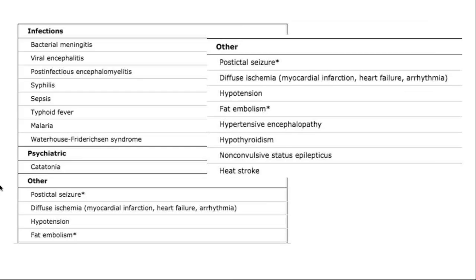An interesting etiology that is metabolic in nature but results in structural pathology is hyponatremia. Rapid correction of hyponatremia may result in central pontine myelinolysis — osmotic demyelination — creating a lesion in the brainstem. It has a characteristic appearance on MRI, specifically on T2 and FLAIR sequences, where the demyelination creates what we call the 'piglet face sign'.